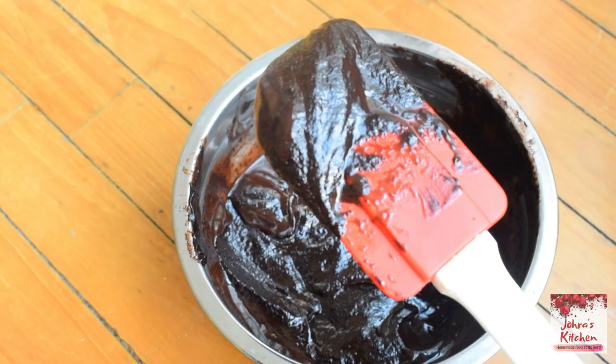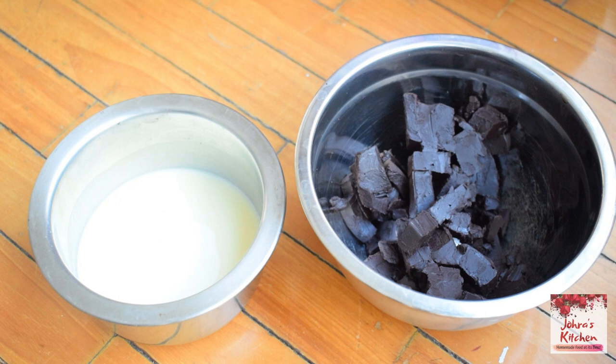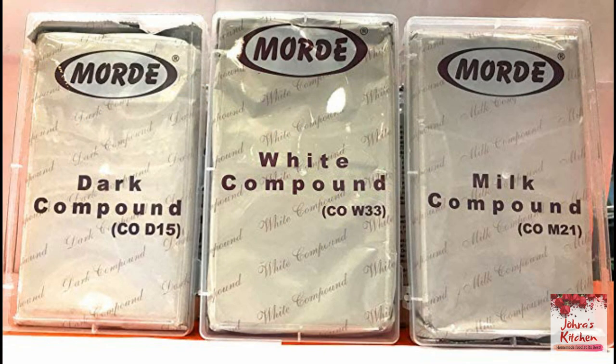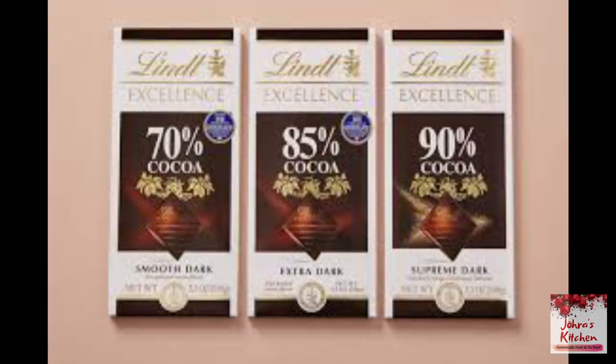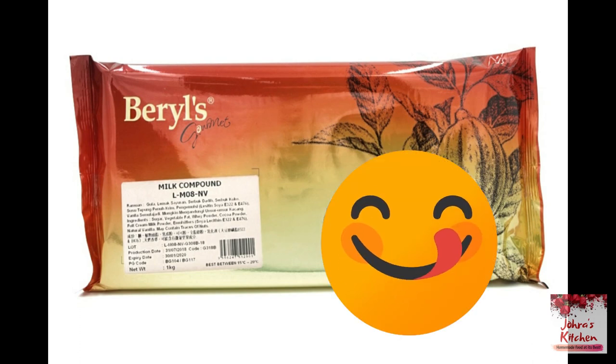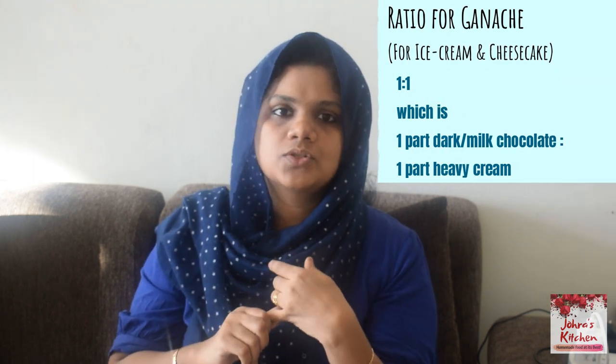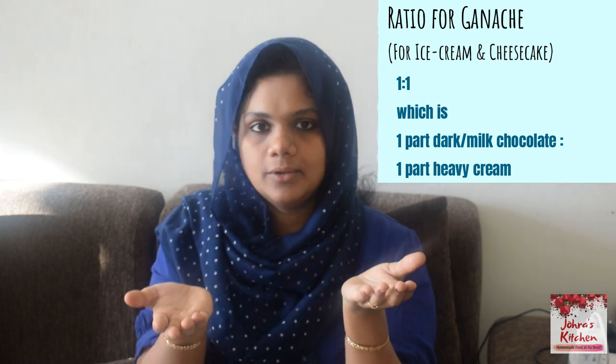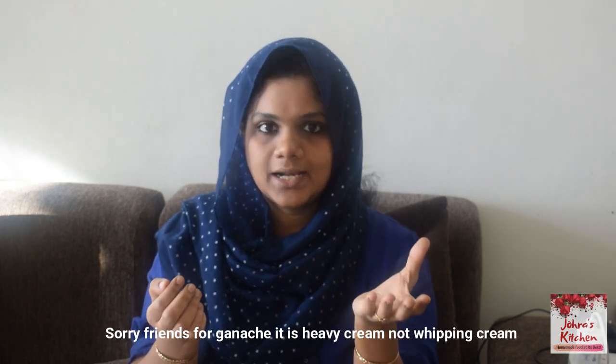Next, we can talk about ganache. We can do two types: one is white chocolate and one is dark chocolate. For ganache frosting, you use heavy whipping cream with white or dark chocolate. You can also add some vanilla butter. The ratio of ganache is 1 to 1 — 100 grams chocolate to 100 grams heavy whipping cream.